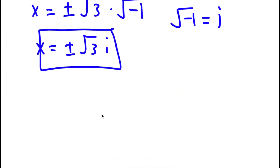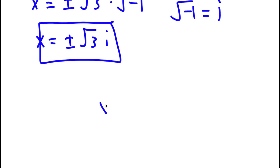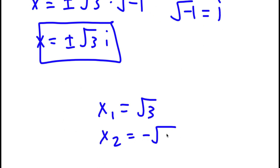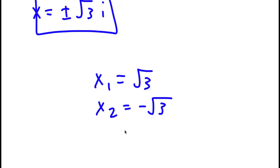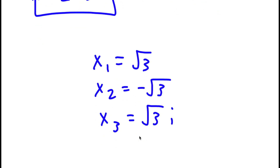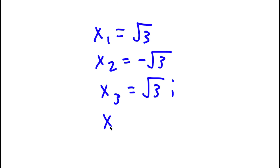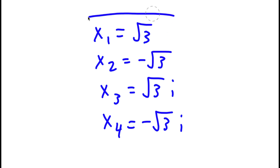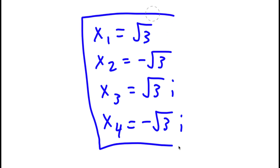All four solutions are: x equals square root of 3, x equals negative square root of 3, x equals positive square root of 3 times i, and x equals negative square root of 3 times i.